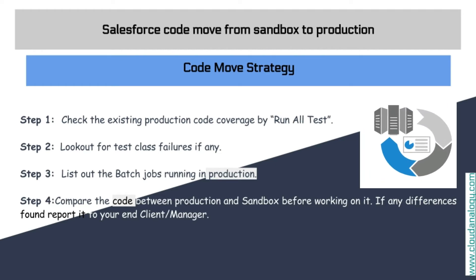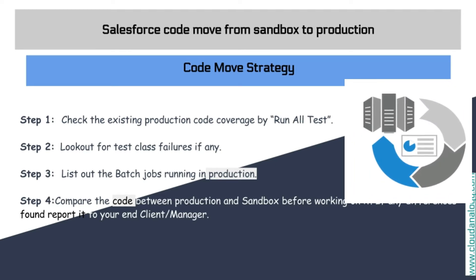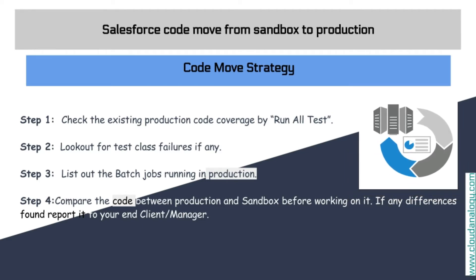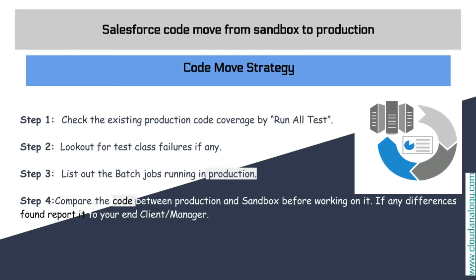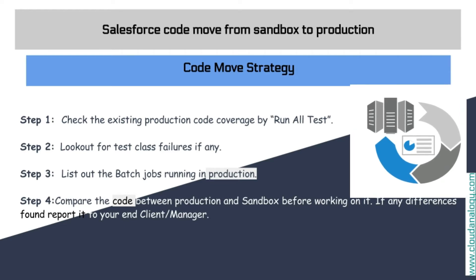We should run all tests before deployment and identify any test class failures, reporting them to the manager and end client. Step three: list out the batch jobs running in production to determine which ones need to be deactivated during deployment. Step four — a mandatory step — compare the code between production and sandbox before working on it. If any difference is found, report it to your end client or manager.